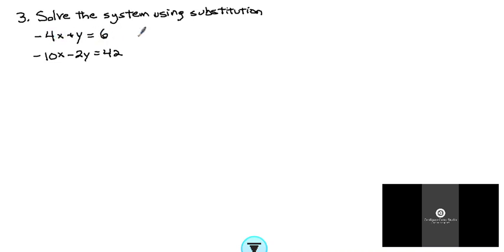I'm going to take the first equation and rearrange it. So I'm going to take negative 4x plus y equals 6 and I'm going to add 4x to both sides of the equation.